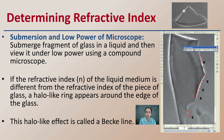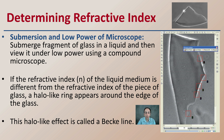This is great for small pieces or fragments. If the refractive index of the liquid medium is different from the refractive index of the piece of glass, a halo-like ring appears around the edge of that glass, and we can see that here.